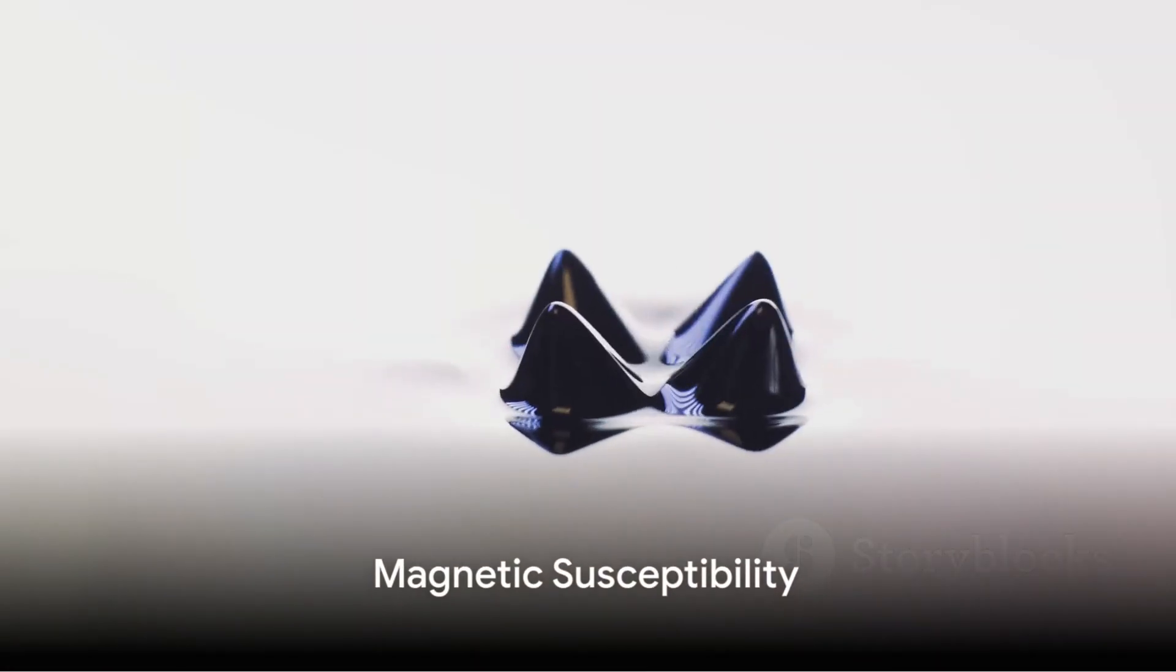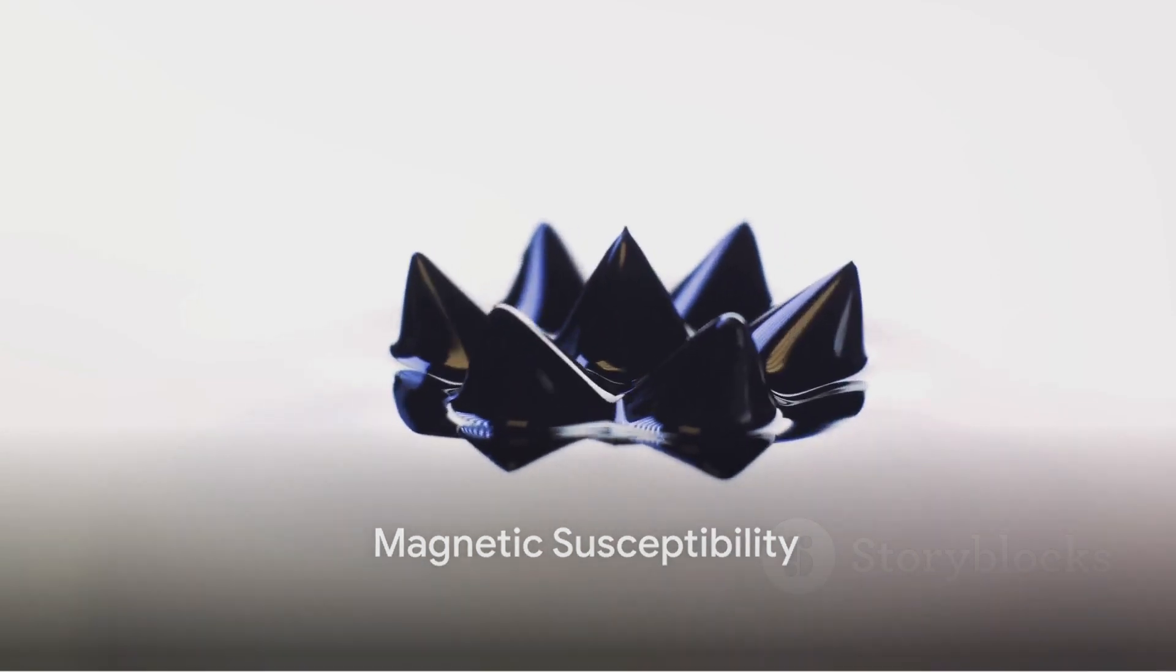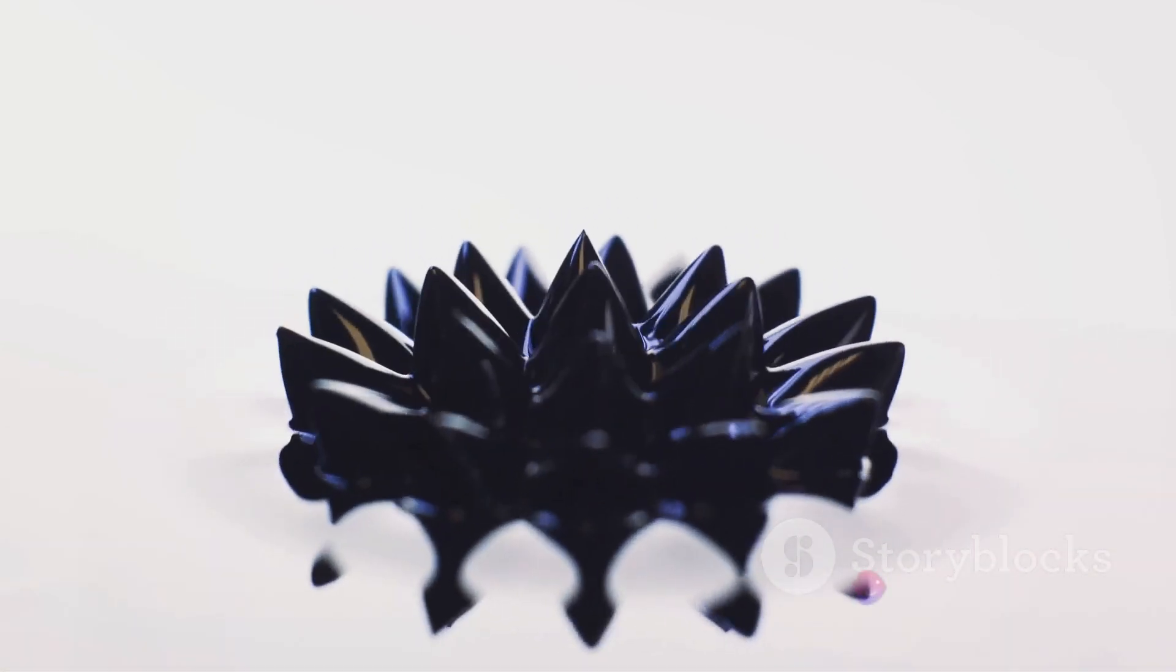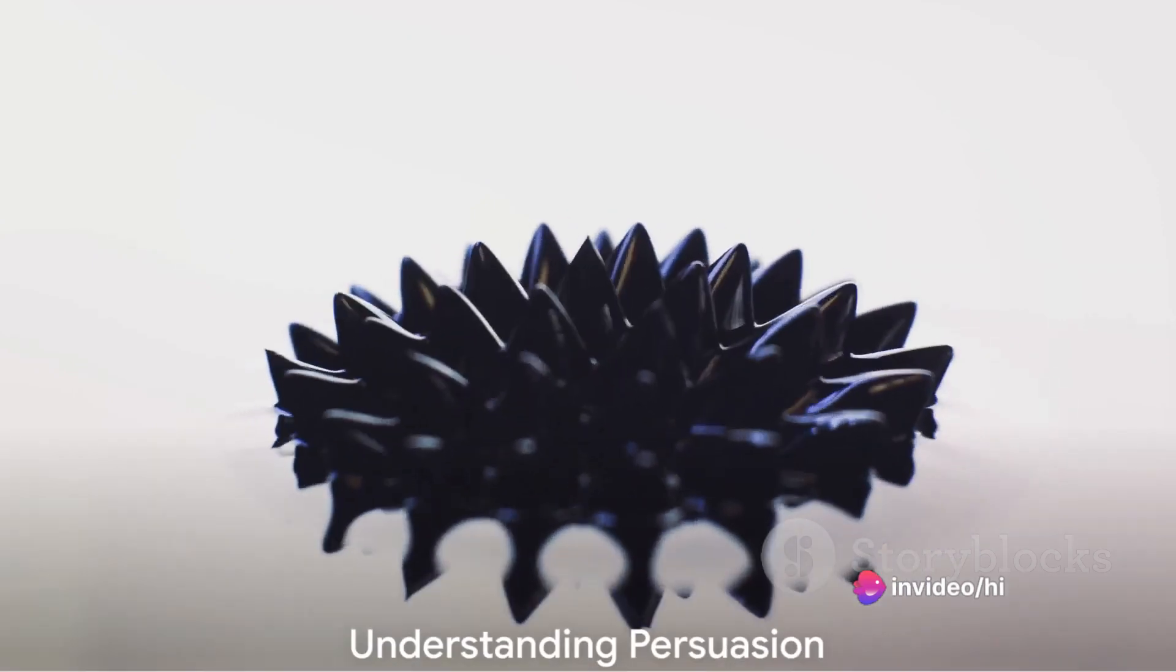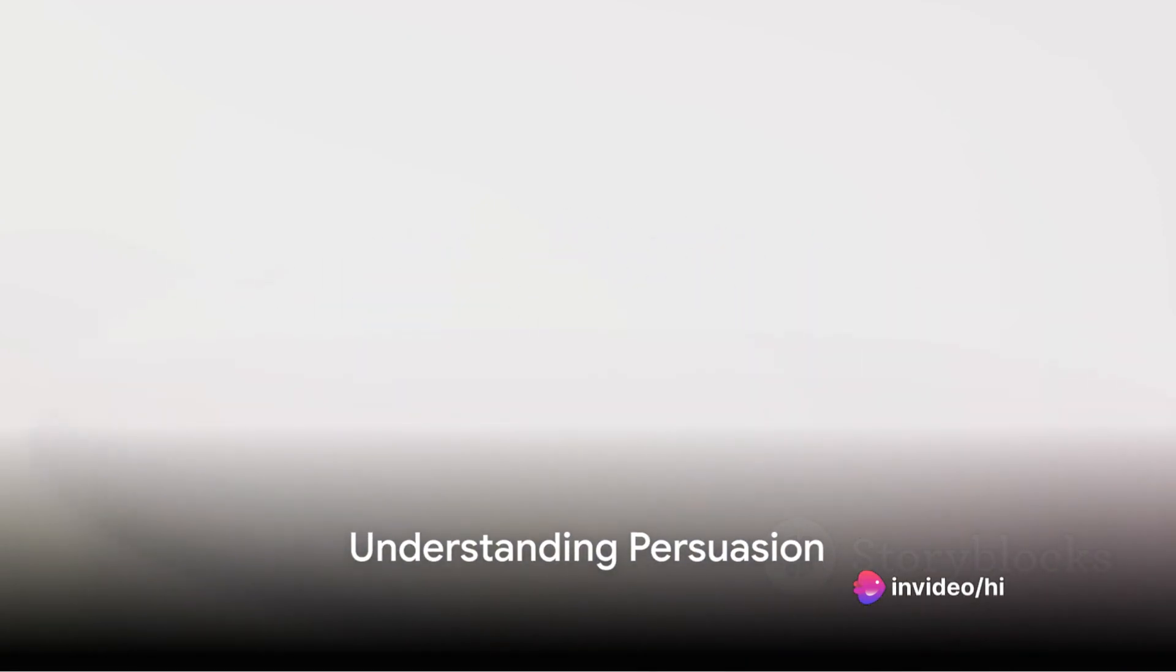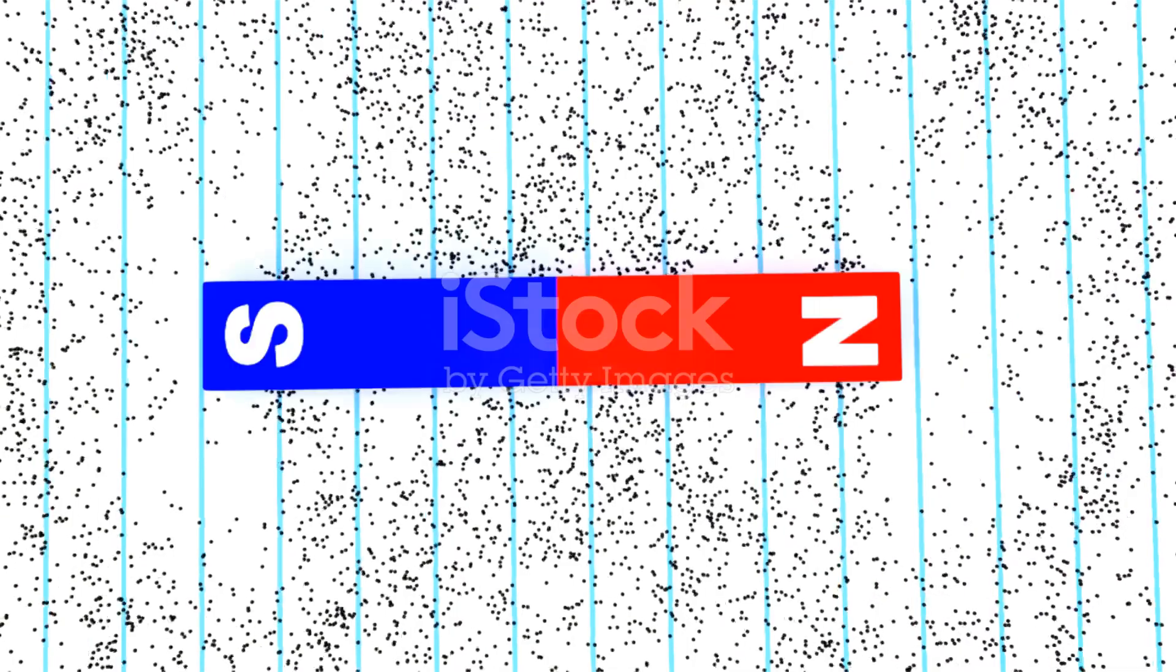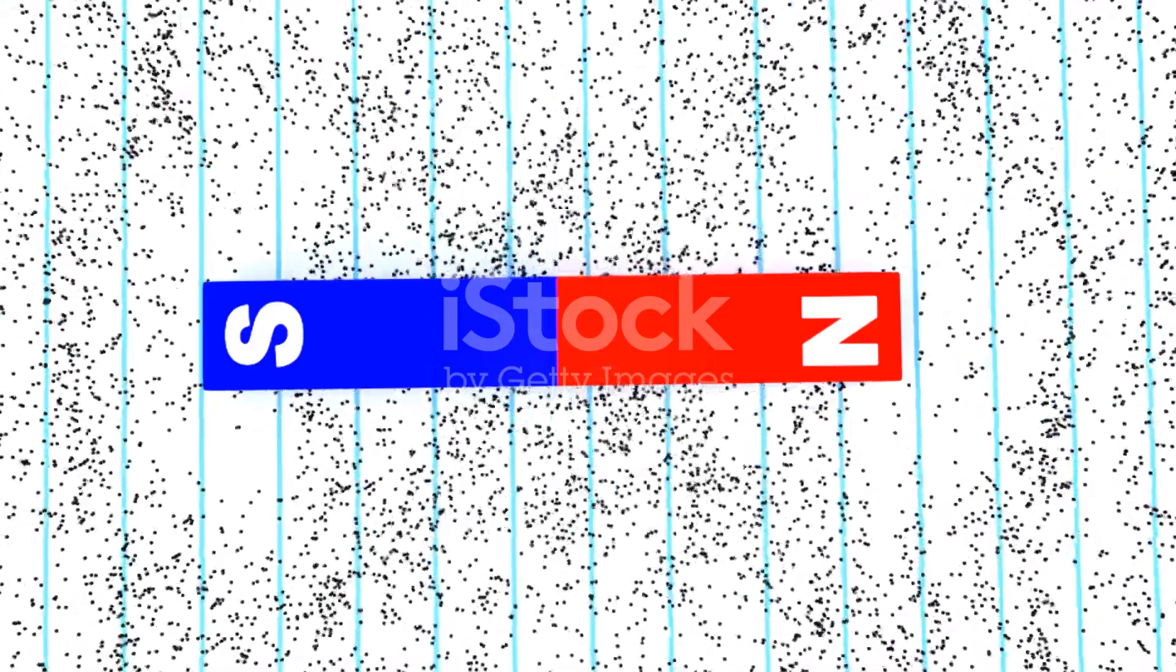Lastly, we examine magnetic susceptibility, which quantifies how easily a material can be magnetized when exposed to an external magnetic field. It's like how easily a person can be persuaded. Some people are easily swayed, just like materials with high magnetic susceptibility are easily magnetized.